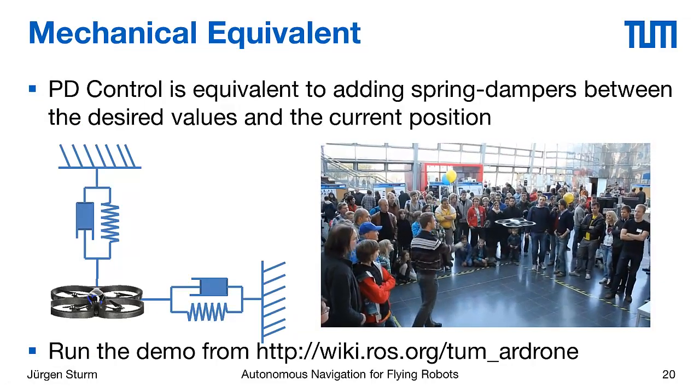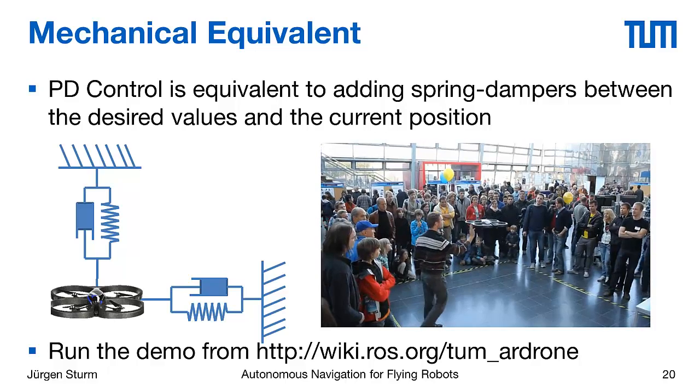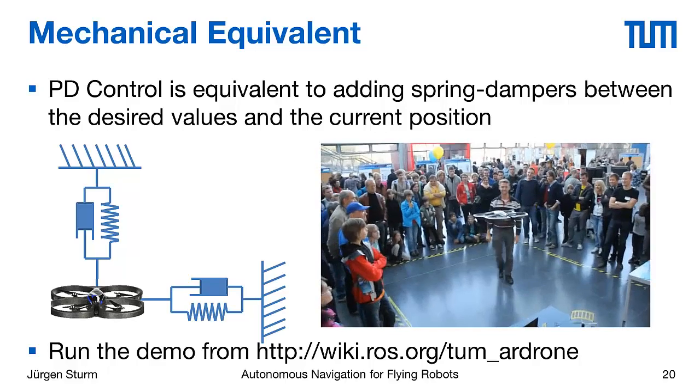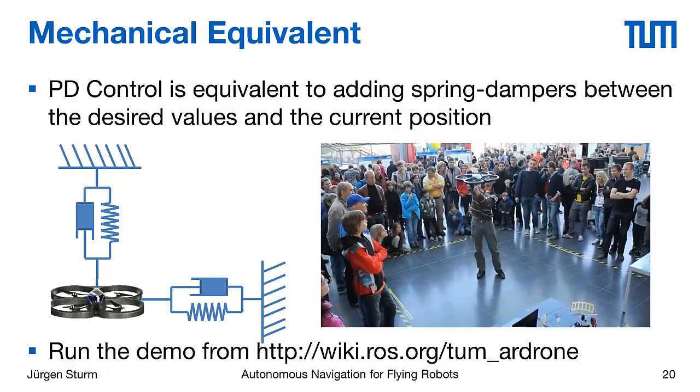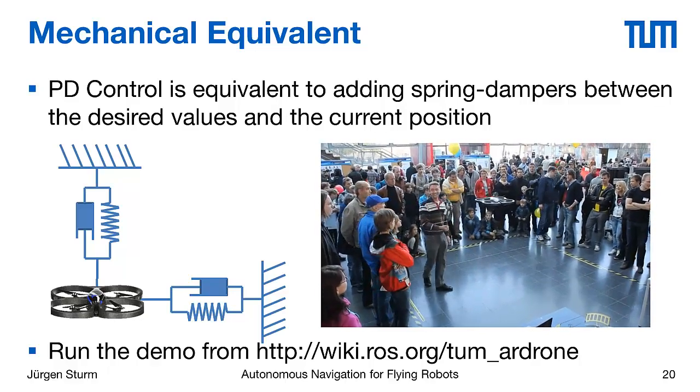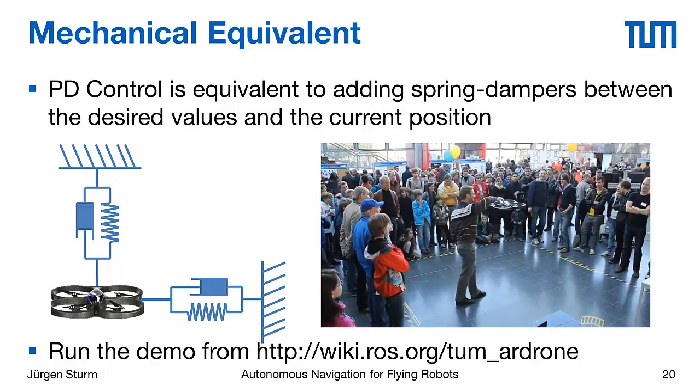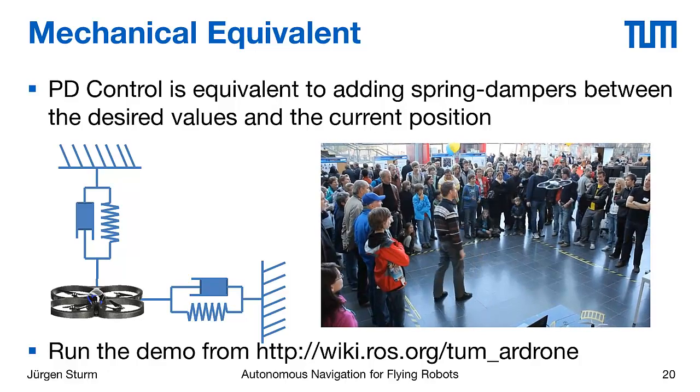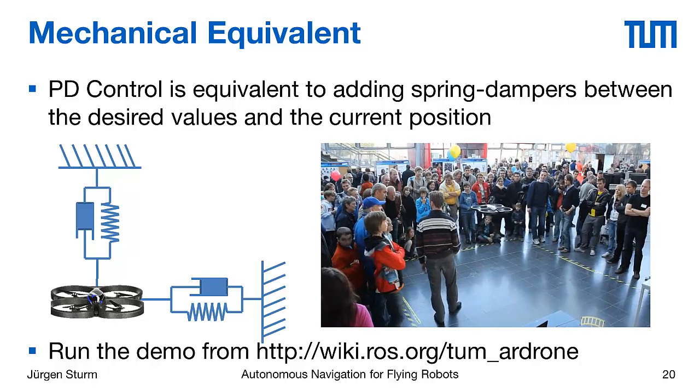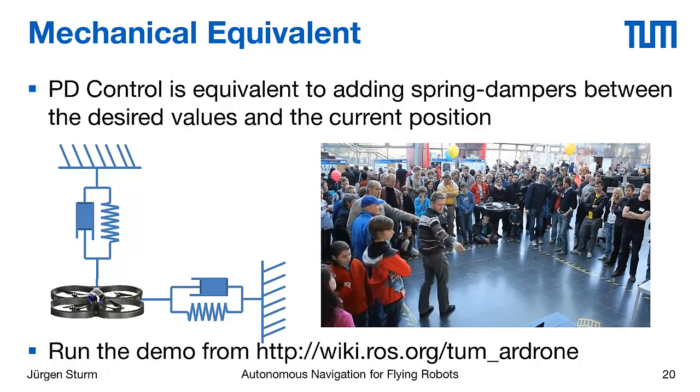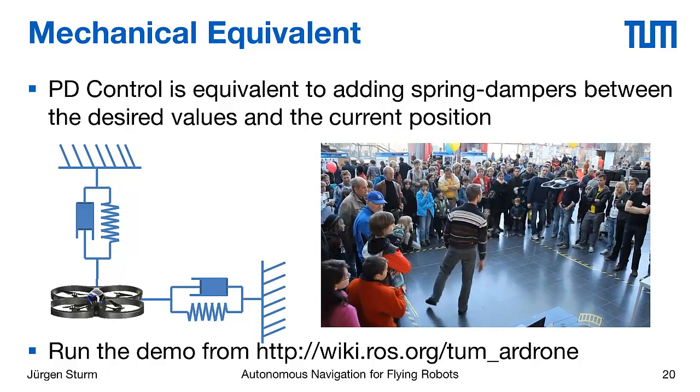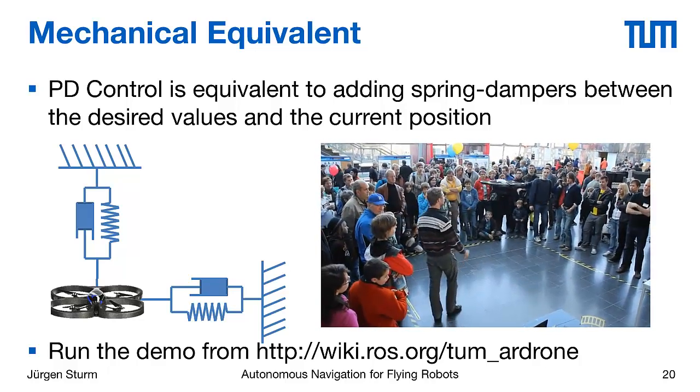There is another interesting insight. The PD controller is actually equivalent to a spring damper system. You can imagine that you have your quadrotor that is supposed to go to this desired location, and it is actually being pulled with virtual springs towards this desired location. If you look very closely on this video, you can see how this quadrotor moves back to its set point. You can see how it is being damped by the D term of the PD controller and how it is being pulled towards its set point using the P part.